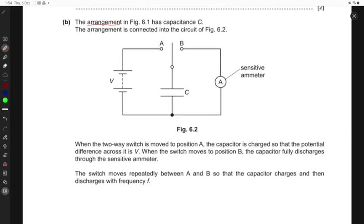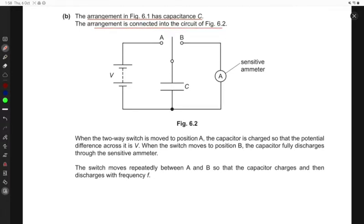Next, the arrangement in figure 6.1 has a capacitance of C. The arrangement is connected into the circuit as shown in this figure. So here is the circuit and they're saying when the two-way switch is moved to position A, the capacitor is charged so that the potential difference across it is V. When the switch moves to the position B, the capacitor fully discharges through a sensitive ammeter.